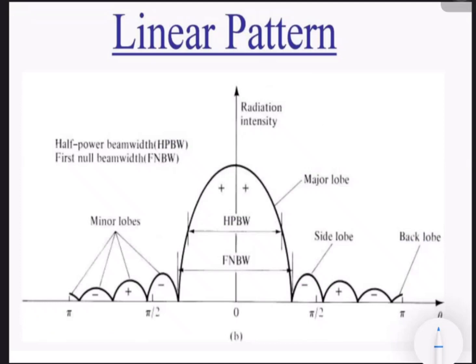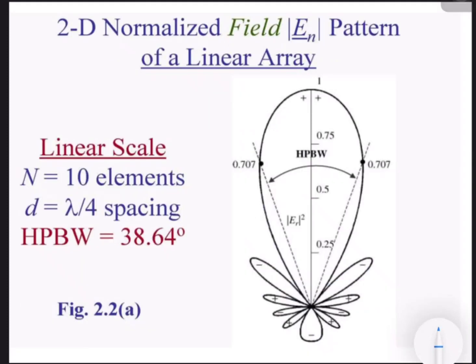In the polar representation, we can see the major lobe and a tail-like back lobe, with three side lobes. The first null beam width and the half-power beam width are also indicated. We can also represent the radiation pattern in linear pattern — on a linear scale in X and Y axes. Here we can see the major lobe where the radiation intensity is maximum, the side lobes, and the back lobes.